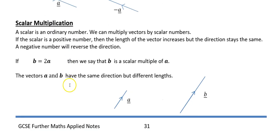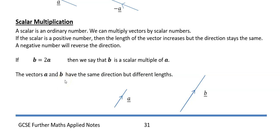If you multiply a vector by a scalar, if vector b equals 2 times vector a, then vector b is parallel to vector a but it's just twice as long.